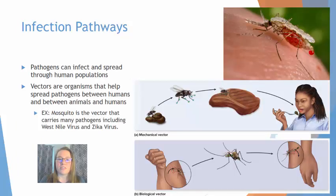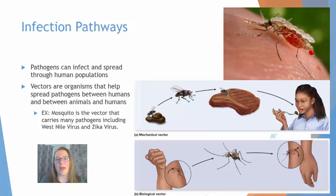Pathogens use what are called infection pathways and these pathogens can infect and spread throughout the human population. Oftentimes in order to enter the human population they have to use something called a vector — an organism that becomes infected with a pathogen but does not necessarily show any symptoms. For example, the mosquito is the vector that carries a huge variety of pathogens including West Nile virus and the Zika virus.